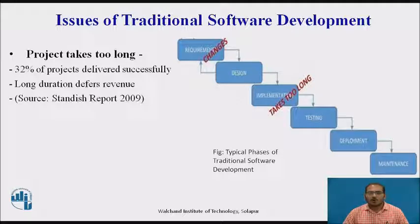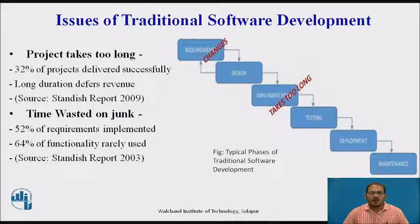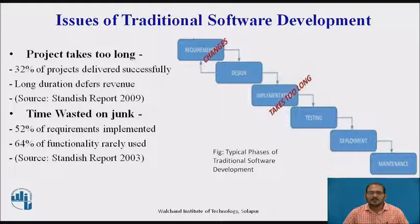Projects take too long. If there are any changes in the requirement or design phase, as per survey only 32% of projects are delivered successfully. Additionally, developers implement features out of which only a few are actually used — as per survey, 64% of functionality is rarely used.